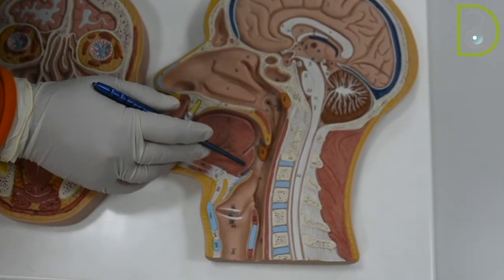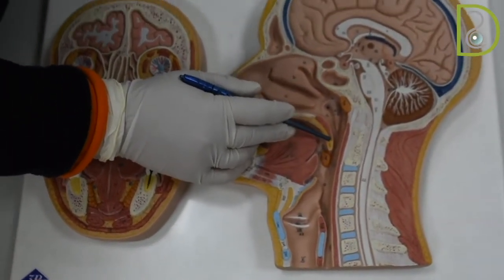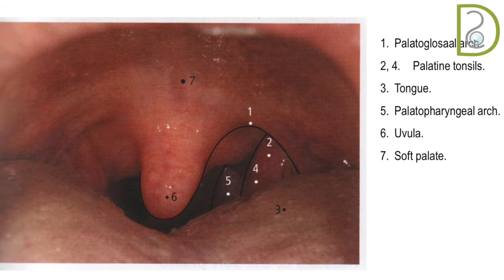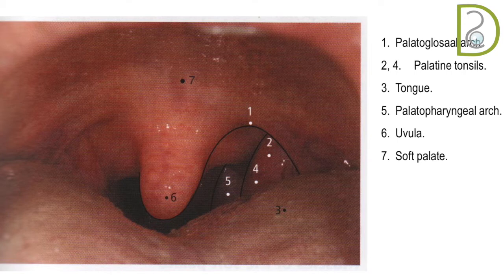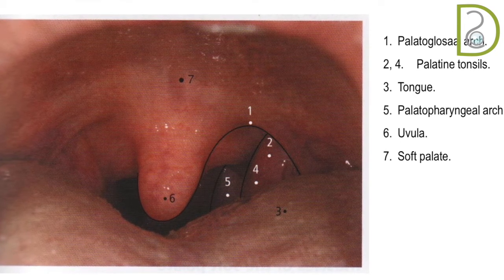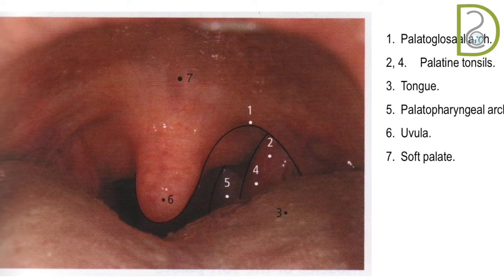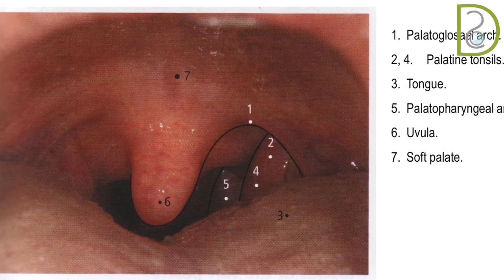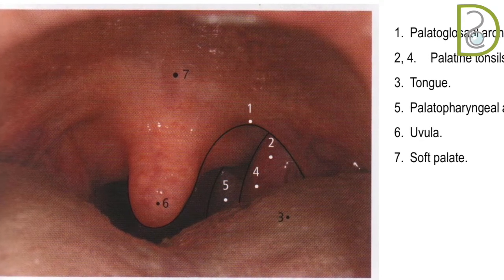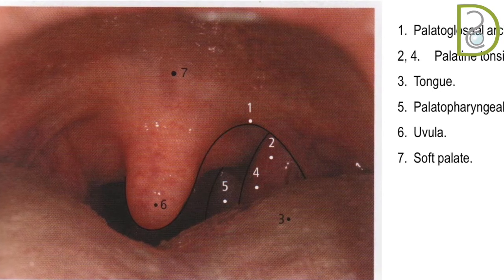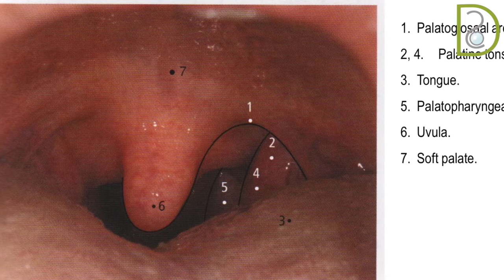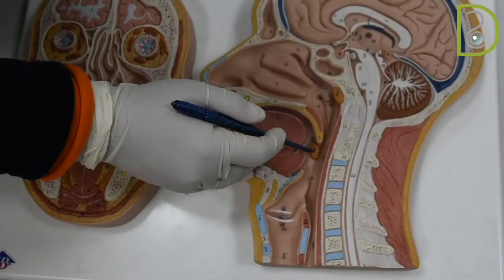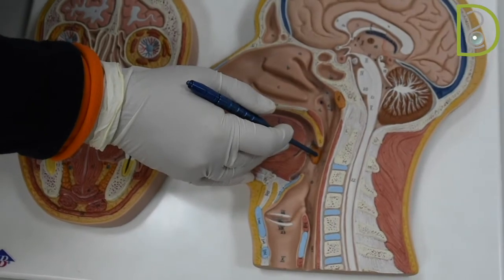The boundaries of the oropharyngeal isthmus: from above is the soft palate, from below is the back of the tongue, and from the sides are two folds — the palatoglossal and palatopharyngeal arches. The palatoglossal arch contains the palatoglossus muscle and runs from the soft palate to the sides of the tongue, with one arch on the right and one on the left. The palatopharyngeal arch contains the palatopharyngeus muscle and runs from the soft palate to merge with the lateral wall of the pharynx. In between the two arches are the palatine tonsils.